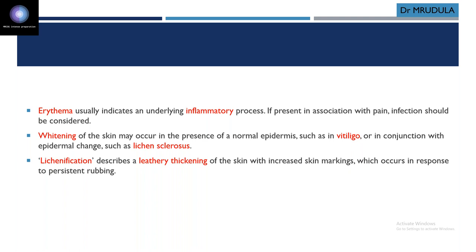Whitening of the skin can occur with normal epidermis — as in vitiligo — or with epidermal changes like lichen sclerosis. Lichenification refers to lichen sclerosis, lichen planus, or lichen simplex — it is a leathery thickening of the skin with increased skin markings due to persistent rubbing.